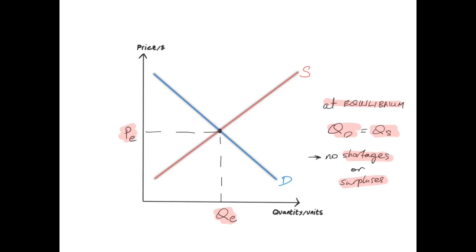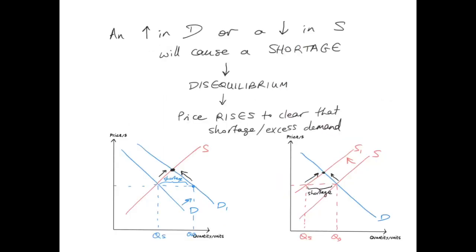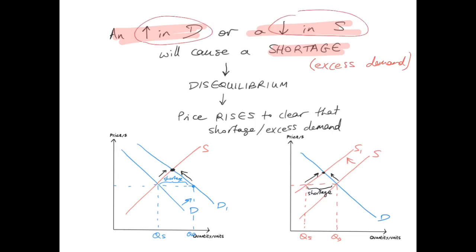What happens when something throws the market out of equilibrium? How do changes in prices bring the market back to equilibrium and get rid of any shortages or surpluses? Either an increase in demand or a decrease in supply will create a shortage — a situation of excess demand. The market is now in disequilibrium, so how do prices change to bring it back to equilibrium?